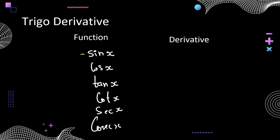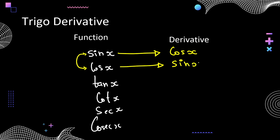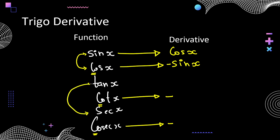First, remember sine and cos are related. The derivative of sin(x) is cos(x). The derivative of cos(x) is -sin(x). Notice: whenever a trigonometric function starts with 'c', the derivative is always negative. So whatever the answer is for cos, cot, or cosec, the derivative will be negative. Next, tan and sec are related: the derivative of tan(x) is sec²(x).